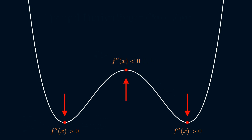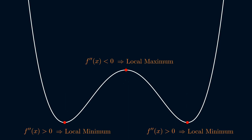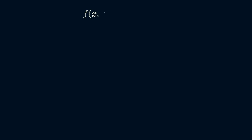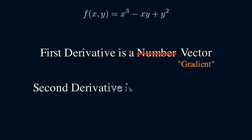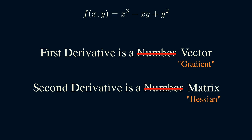The sign of the second derivative is really useful because it can help classify points as maxima or minima, but the second derivative is only a number in single variable calculus. In multivariable calculus, when we have a function with multiple inputs and a single output, the first derivative is no longer a number but becomes a vector called the gradient. Even worse, the second derivative changes from a number to a matrix called the Hessian, so we can't just look at the sign of the second derivative to classify maxima and minima — because what does it even mean for a matrix to be positive or negative?